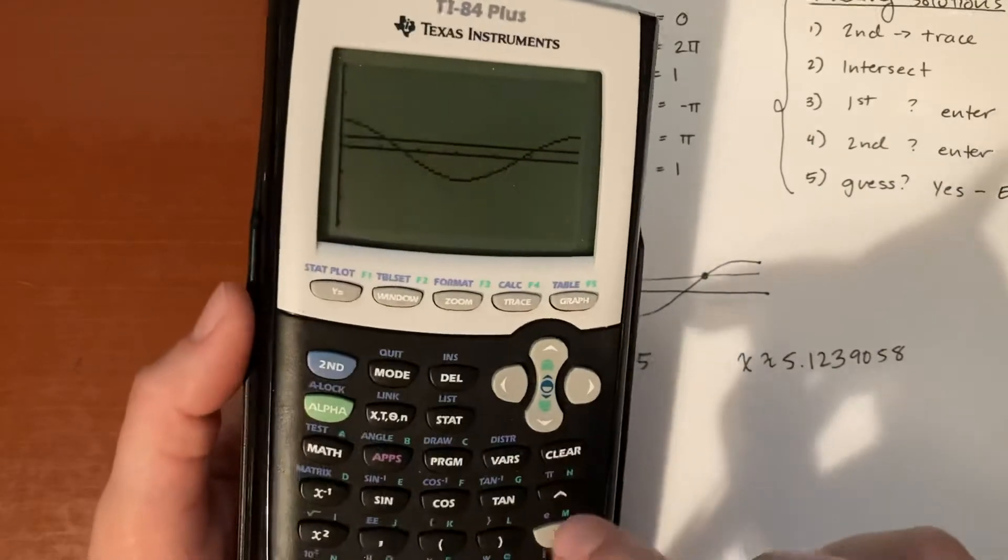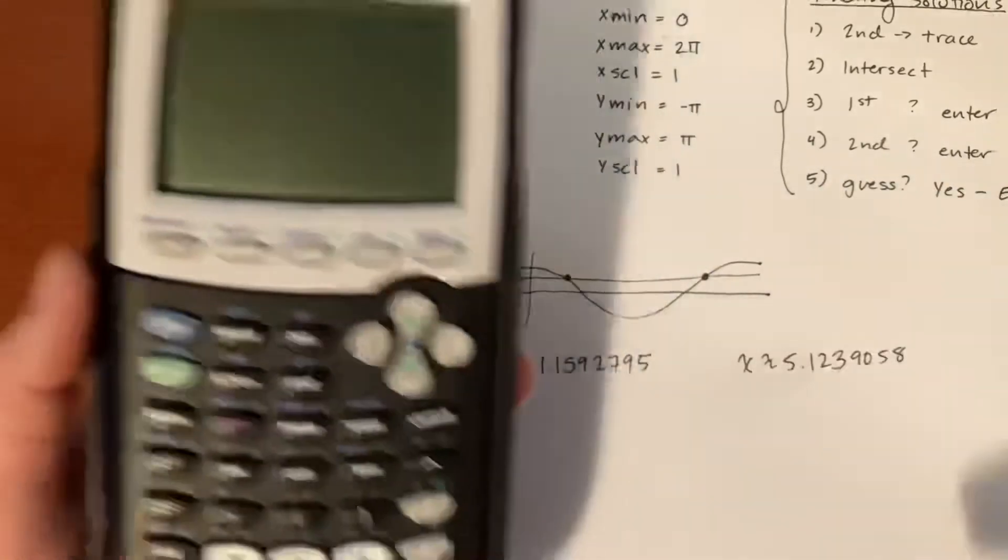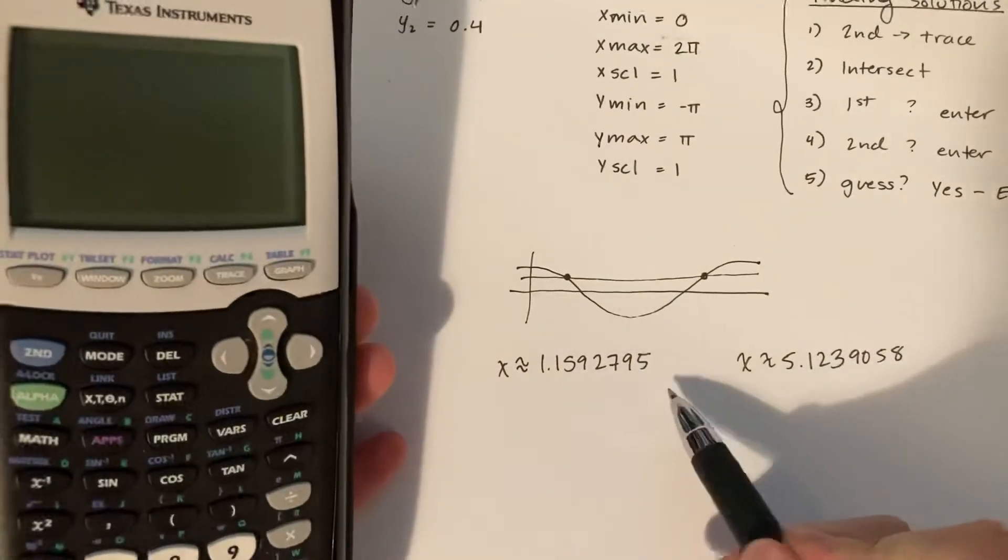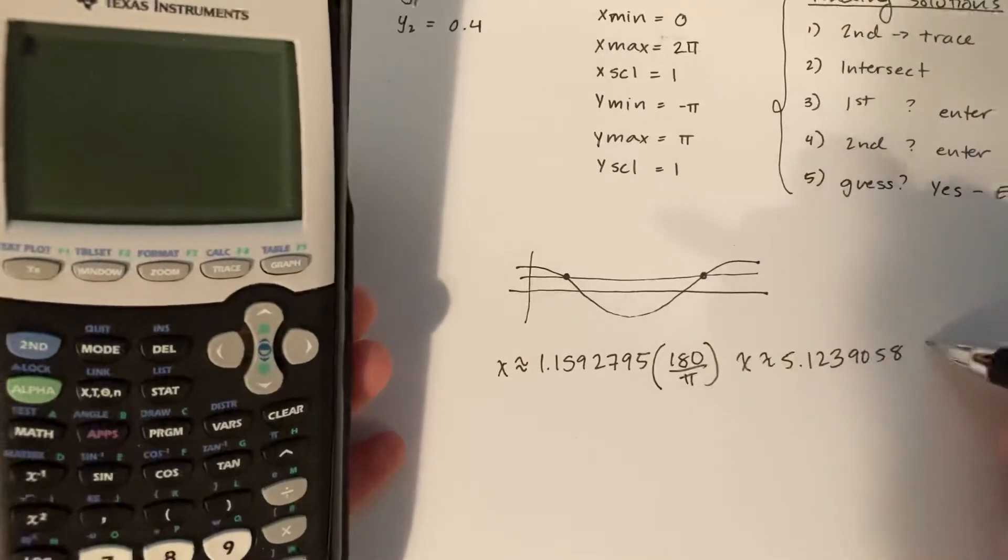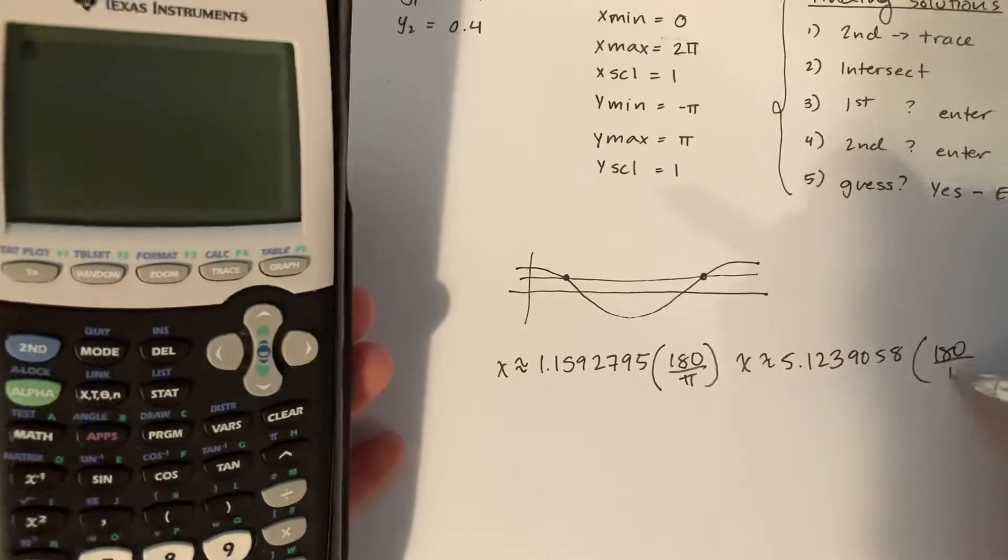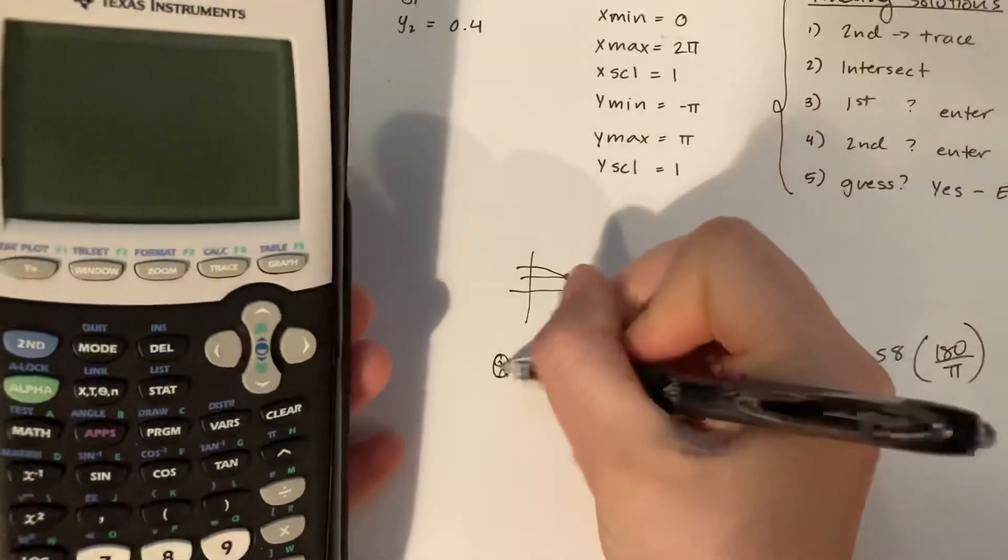Now we need to answer in degrees, so go ahead and clear out the graph. How do we convert these to degrees? Well, once again, remember the conversion: you multiply them by 180 over pi. When we do that, we'll end up with our theta values.